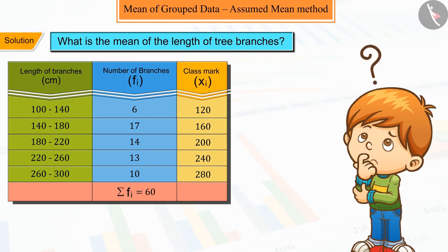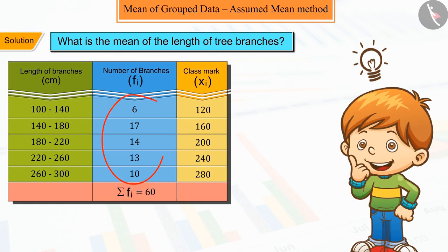Let's see. Here, we cannot do anything with fi, but xi can be reduced to a smaller value, and hence our calculation becomes easier.